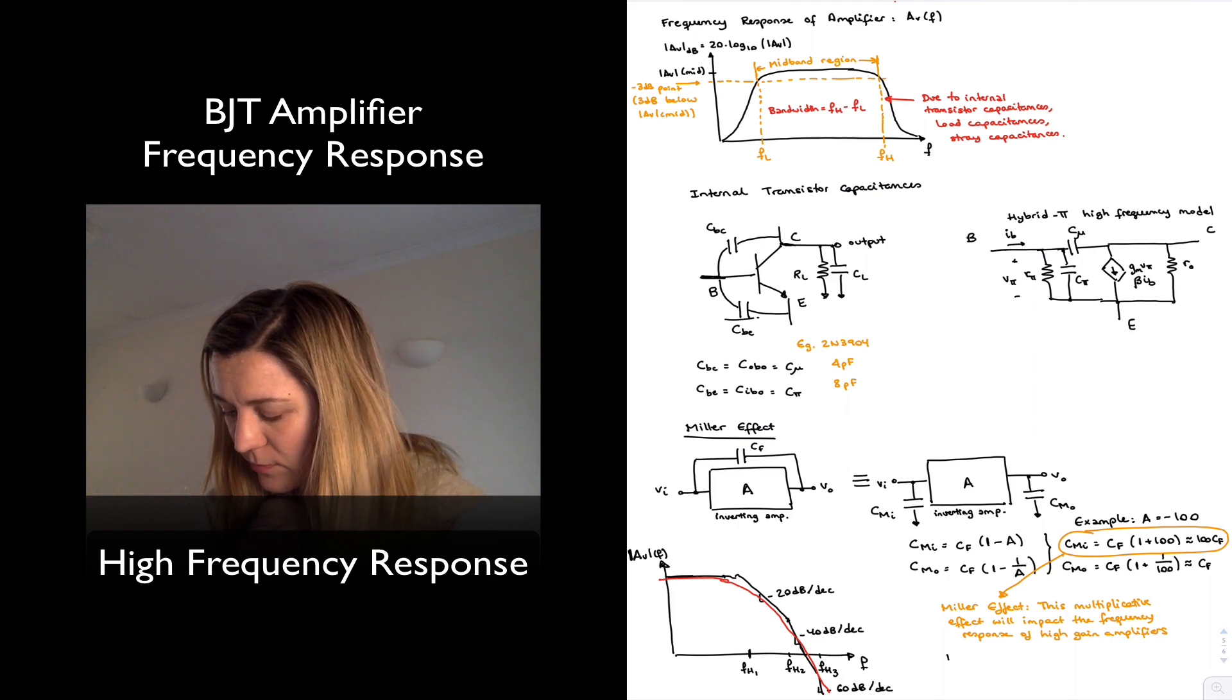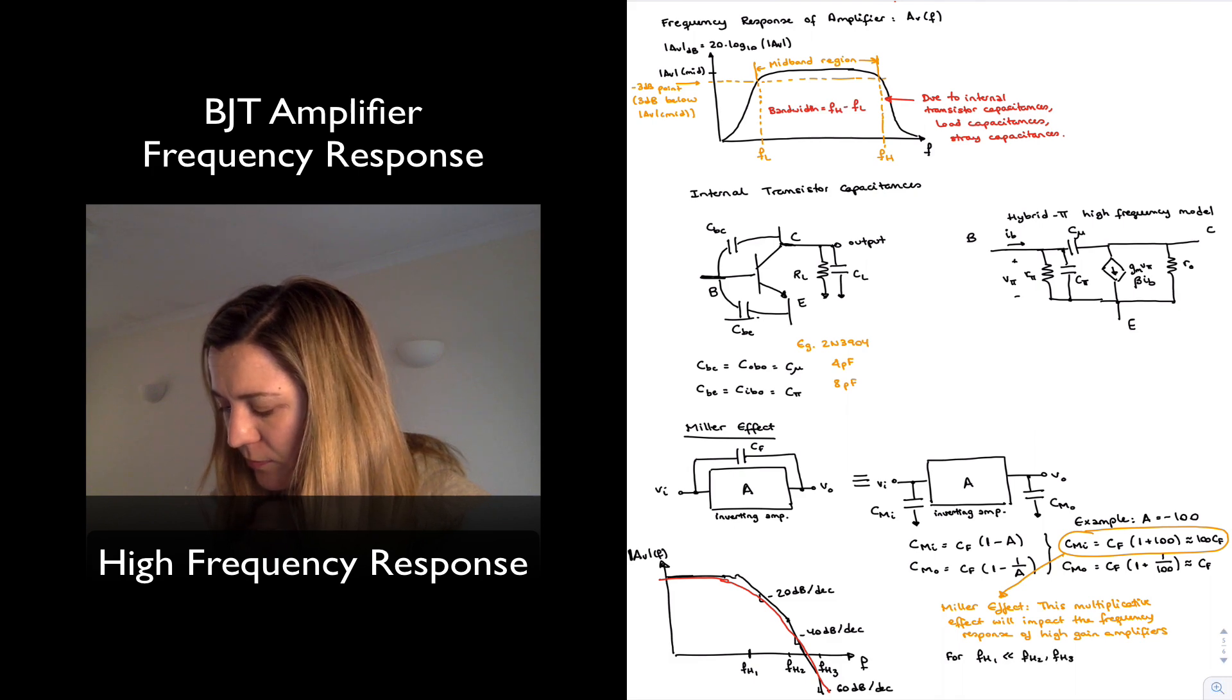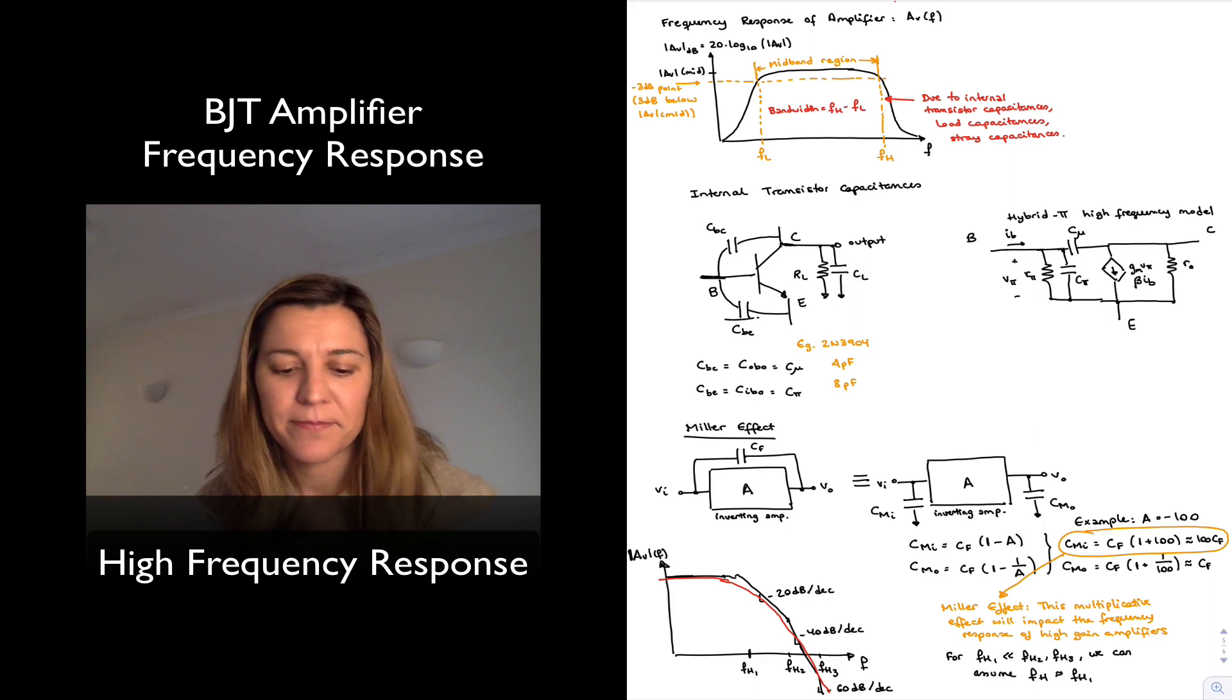And so for FH1 being much smaller than FH2, FH3, etc., we can assume that the overall high cutoff frequency is going to be approximately equal to FH1. Thank you.